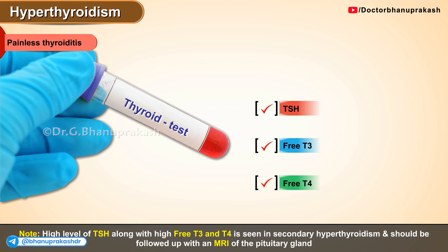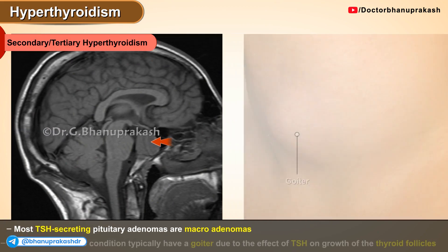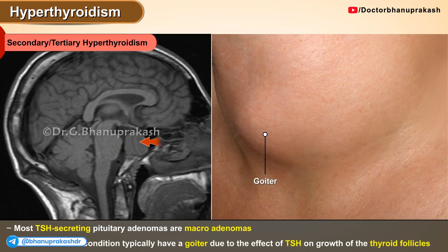A high level of TSH along with high levels of free T3 and T4 is seen in secondary hyperthyroidism and should be followed up with an MRI of the pituitary gland. Most TSH-secreting pituitary adenomas are macroadenomas and patients with this condition typically have a goiter due to the effect of TSH on the growth of the thyroid follicles.